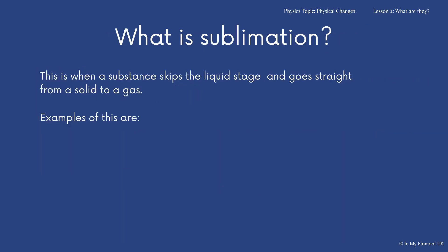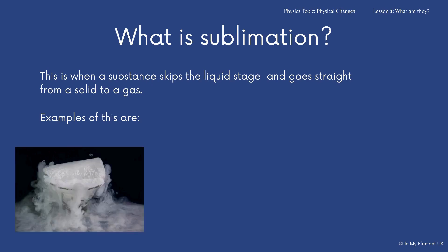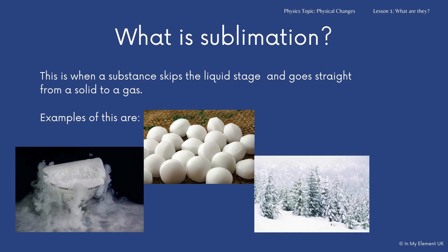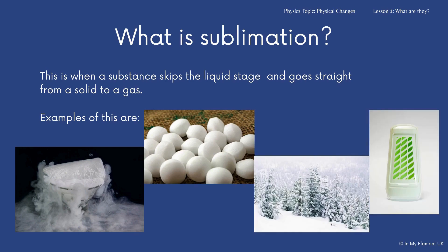Let's take a look at what sublimation is. Very simply, it's where substances like carbon dioxide — solid carbon dioxide known as dry ice — can change state, but they skip out a stage. So it will go straight from being a solid to a gas. What's important to remember is the mass of the gas after sublimation is exactly the same as the mass of the solid that you had.